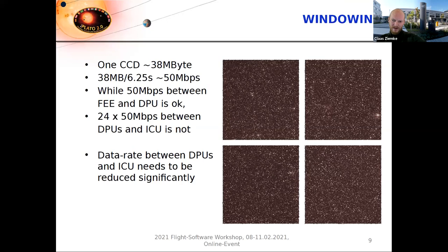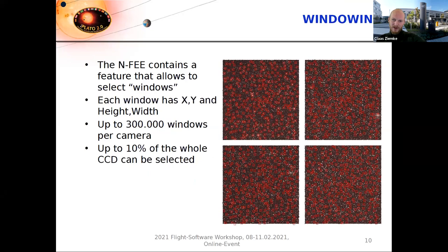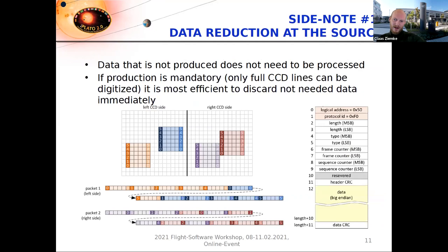How do we do this? It's again very similar to the Kepler mission. We have in the FEEs a feature called windowing, which allows us to define areas of interest for the CCDs — we call them windows. They each have an XY coordinate, height, and width, and you can place up to 300,000 windows per camera. These windows can cover up to 10% of the whole CCD. By this way, you can reduce the data at the source: when the CCD is read out you can immediately discard pixels you are not interested in, and the windows are serialized into a SpaceWire packet in an interleaved way. This requires quite high computing performance in the DPUs, but it's the only way you can do it.